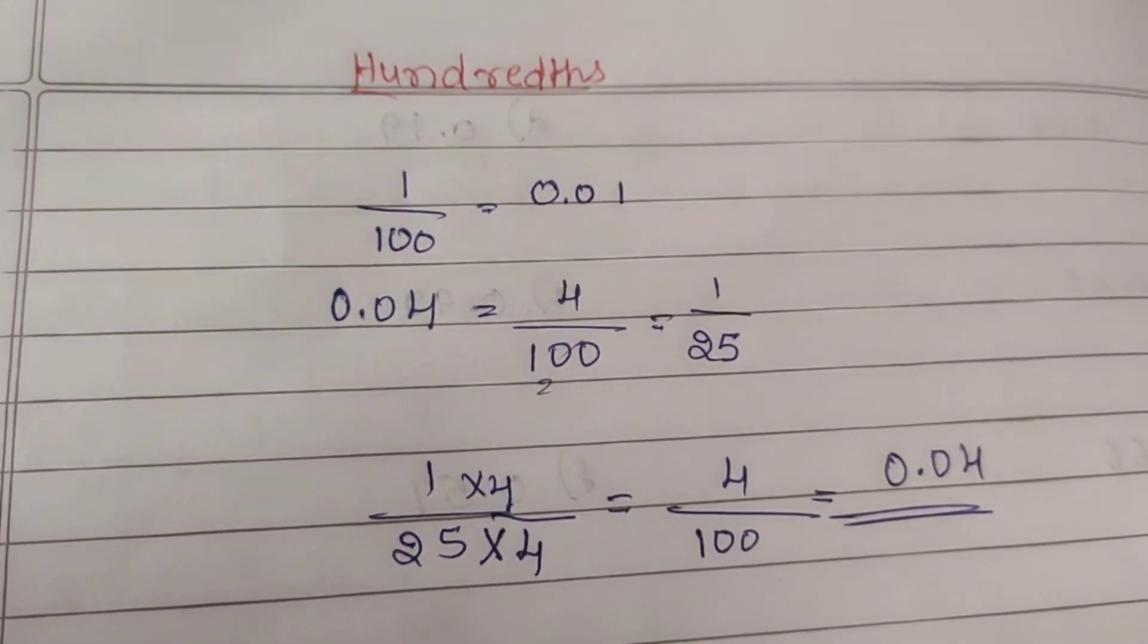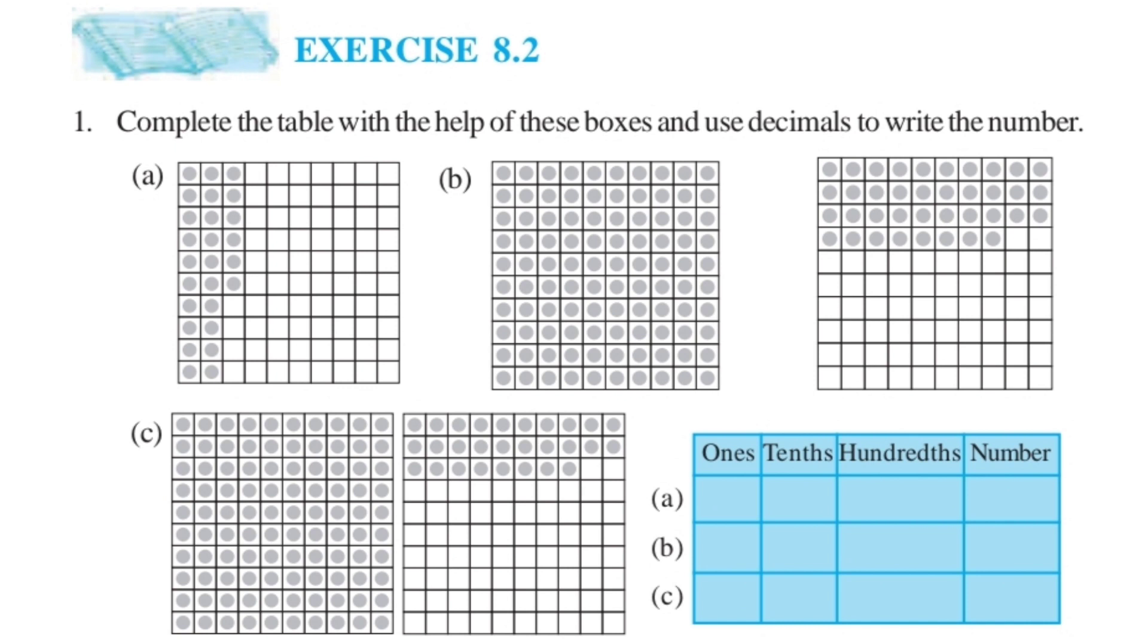Let's solve Exercise 8.2. First question: complete the table with the help of these boxes and use decimals to write the number. We need to count the boxes and fill in a table with ones, tenths, hundredths and the number.